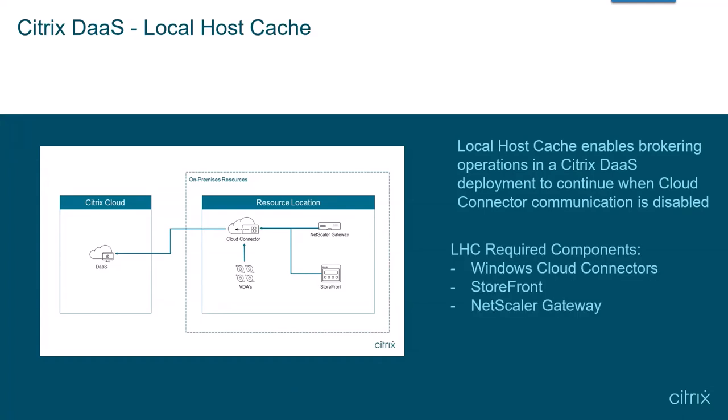For LHC to work, Windows Server-based Citrix Cloud Connectors are required, as at this time the connector appliance is not supported. Each resource location would need a Citrix Storefront server with a minimum version of 1912-CU4, and all of the VDAs must be configured to point to the cloud connectors in the resource location. Lastly, for external connections, NetScaler Gateway is needed.